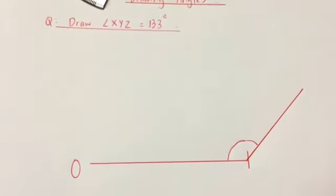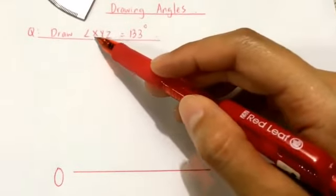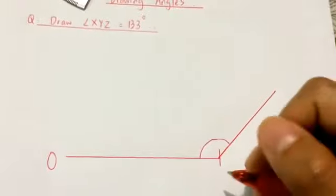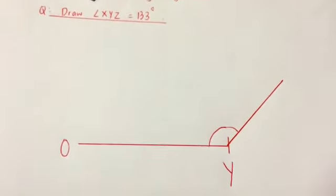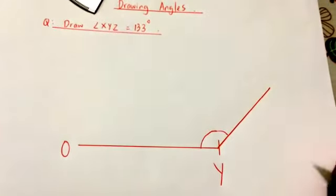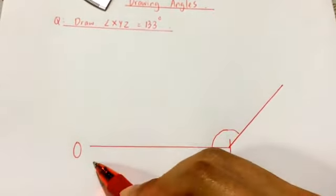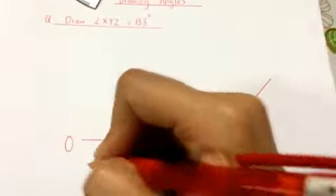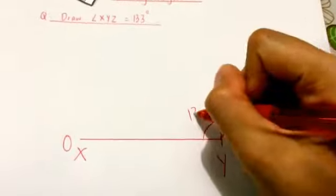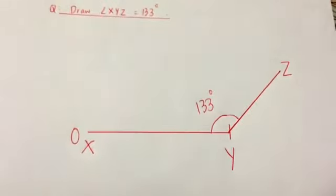Now XYZ, Y is in the center. That means Y is where the angle is. X and Z can be at either points, which means X can be here or X can be here. So angle XYZ is 133 degrees.